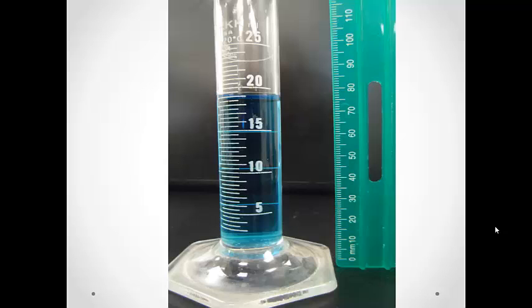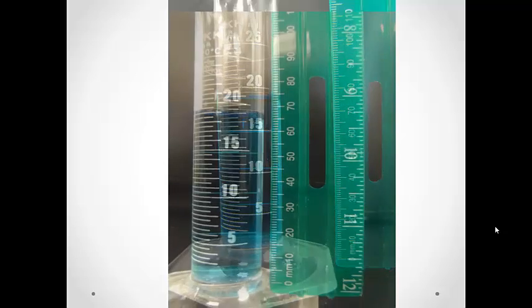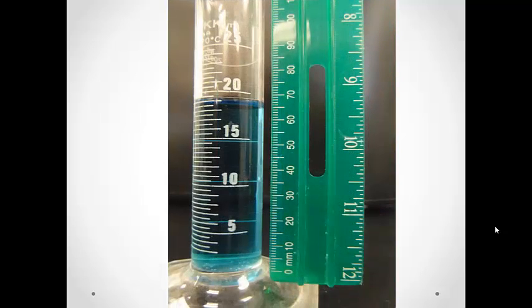Something else to be careful about is how you use the ruler. We only want to measure the height of the water column. Be sure to start at the bottom of the column of water, not the bottom of the cylinder. Also notice that zero on the ruler does not start at the end of the ruler. Precision is important.